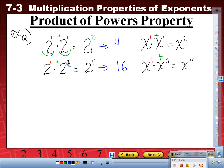How about this one? Copy this. 2 to the third times 2 to the fifth. Same thing with variables: x to the third times x to the fifth.